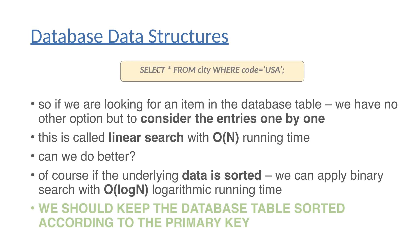If we have a query like SELECT * FROM city WHERE code equals USA, what's going to happen? We have no option but to consider the entries one by one. The operating system fetches the database table content into main memory page by page — first page, second page, third page, and so on — considering every single entry one by one. This is called linear search with O(n) linear running time complexity. Of course, we can do better if we keep the data in sorted order and apply binary search, which reduces linear complexity to logarithmic complexity, which is way faster.